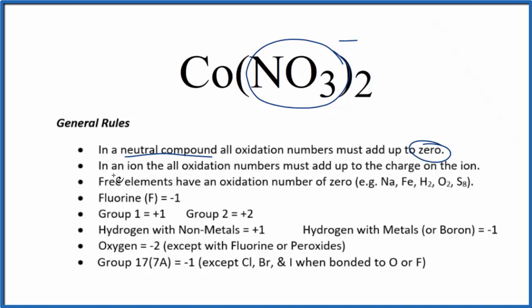When we have ions, the oxidation numbers are going to add up to the charge on the ion. So if I add the oxidation numbers up on the oxygen, these three oxygens plus the nitrogen, I'll get this one minus.